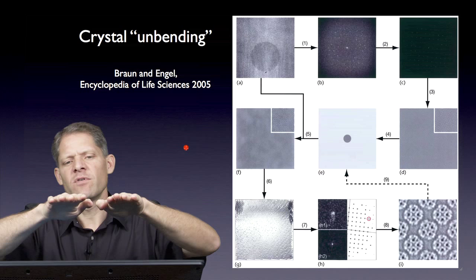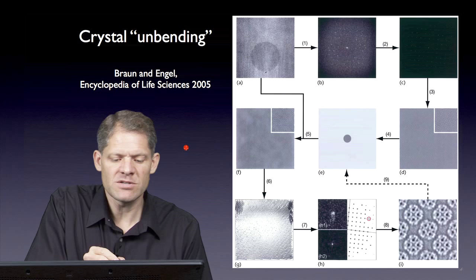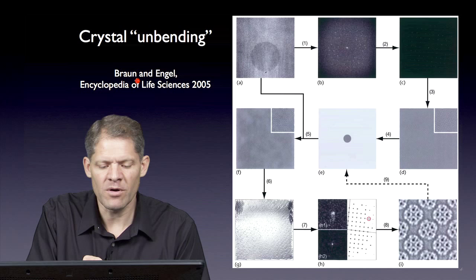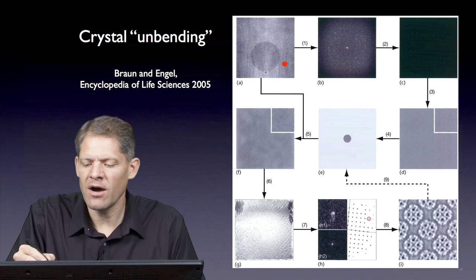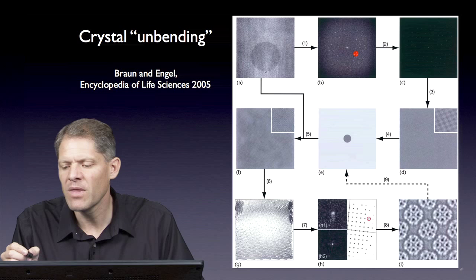What has been observed is sometimes these 2D crystals have distortions and bends within them. Fortunately, some of this can be corrected through image processing. This process is called crystal unbending. Here I'll show a figure from Braun and Engel that illustrates this. Given an image of a two dimensional crystal, one can then calculate its Fourier transform. If you look, you see the individual spots in the diffraction pattern.